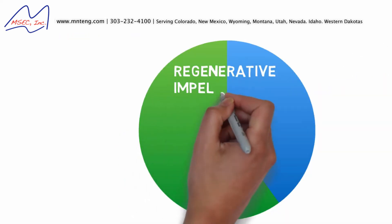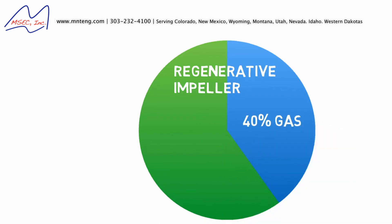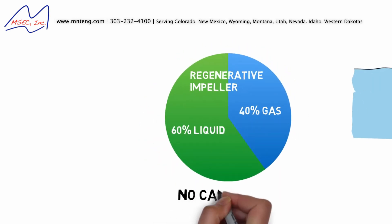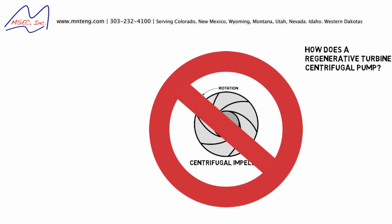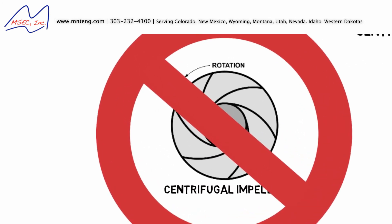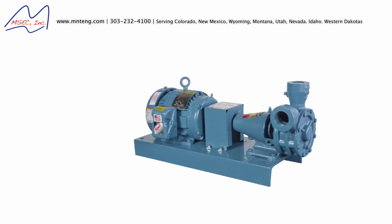The regenerative turbine impeller can pump fluid with up to 40% entrained gases without damage from cavitation or any performance loss. Centrifugal pumps are not designed to handle gas in a liquid. Gas in a centrifugal pump can create a significant loss in performance, causing fluctuating flow, discharge pressure, and unnecessary wear and vibration of the centrifugal pump's internal components. This makes a regenerative turbine pump a great solution where cavitation is a concern.